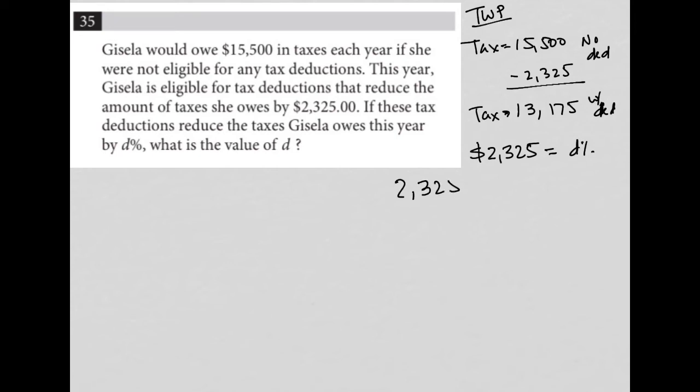so $2,325 over the $15,500, what percentage does that give me? So of course, I have to multiply by 100. But I just go to my calculator and say, 2325 divided by 15500, that's going to be equal to 0.15.